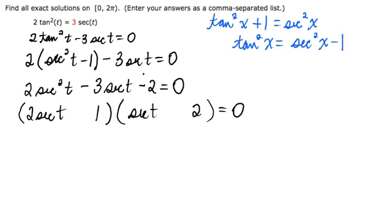And 1 will have to be positive and 1 negative as well in order to multiply to negative 2. But if we put a negative here and a positive there, then if we were to refoil this, we'd have 2 secant squared t for our first term. The outside term would be negative 4 secant t plus the inside term 1 secant t is negative 3 secant t and then the last term is negative 2. So that does work. So now it's factored on the left, it's equal to 0 on the right, so we can set each factor equal to 0 and solve each of those two equations.